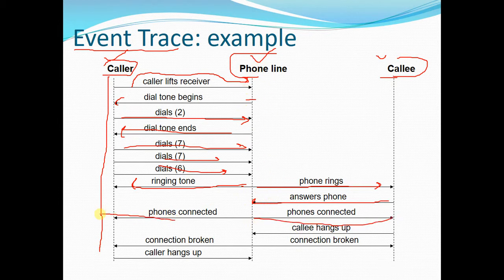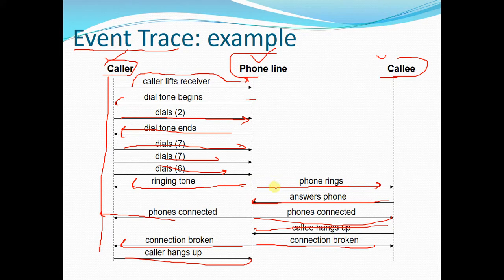The caller answers the phone, and the phone line connects both callee and caller. Then the caller hangs up and the phone line breaks the connection between both parties, after which the callee also hangs up. In this way you can draw an event trace diagram between different objects of any given problem.